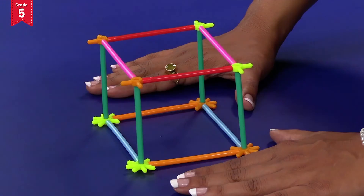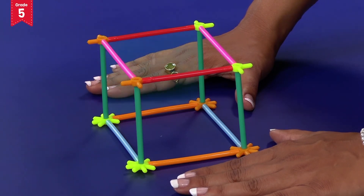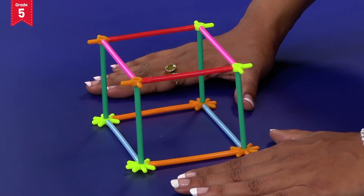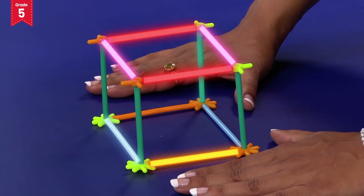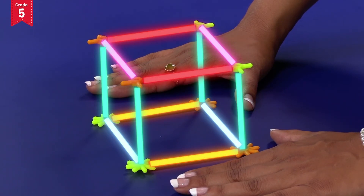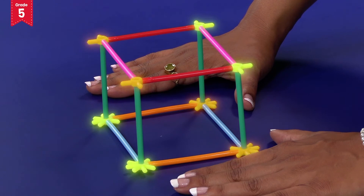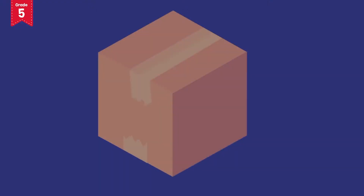Note that the number of faces is equal to the number of 2D shapes formed, that is six. The number of edges is equal to the number of pipes used, that is twelve. And the number of corners is equal to the number of connectors used, that is eight.